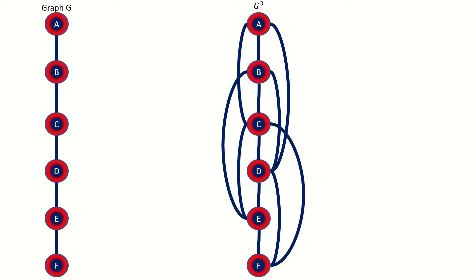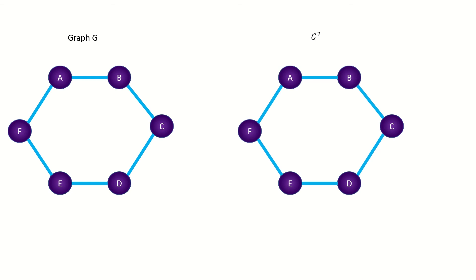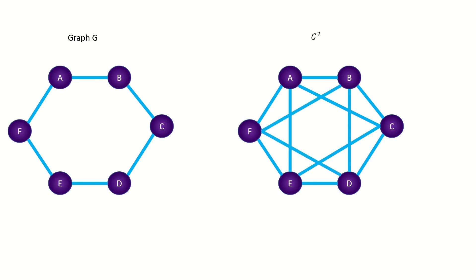Let's look at one more example. What is the second power of the following graph? First, copy the graph over. Next, find pairs of vertices that are 2 apart from each other in the original graph, and connect them in the power graph. That's it — that's the second power of our graph.